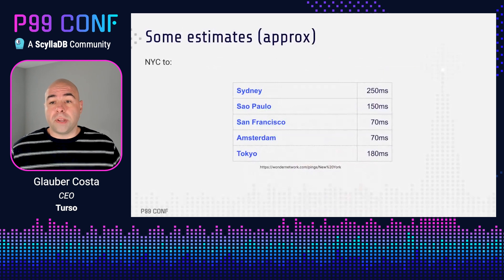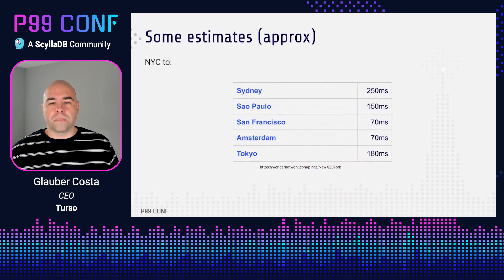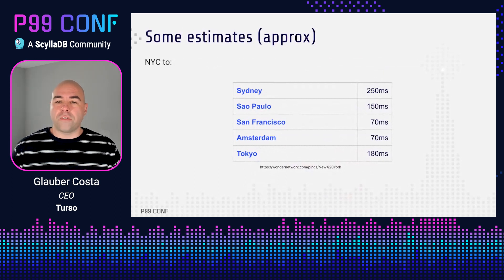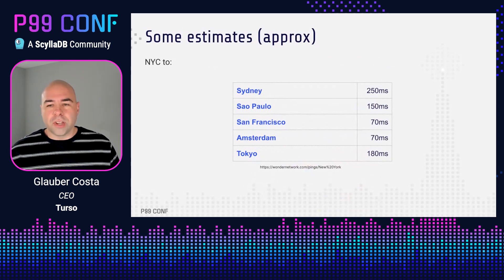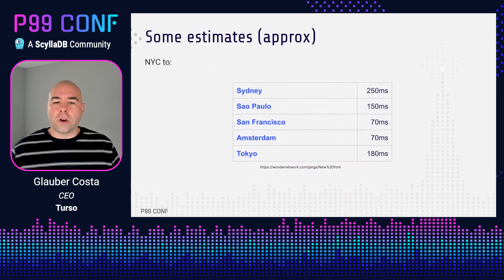Obviously, this example is extreme. But even between New York and San Francisco, latencies can be on the order of 70 milliseconds. As we can see on this table, New York City is also 70 milliseconds away from Amsterdam, 150 milliseconds away from Sao Paulo, and usually 180 milliseconds away from Tokyo. Unless you are using Rust Async with Tokyo in New York, in which case you get the responses pretty much immediately — but that doesn't count. Those are plain times; do anything more complex like HTTP and those numbers go higher.